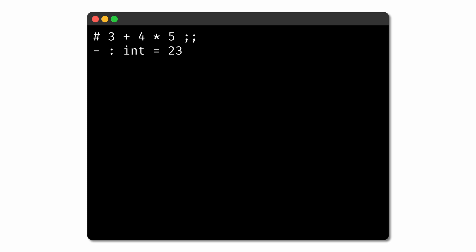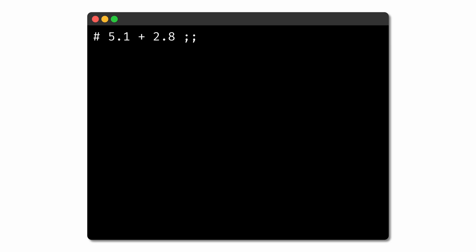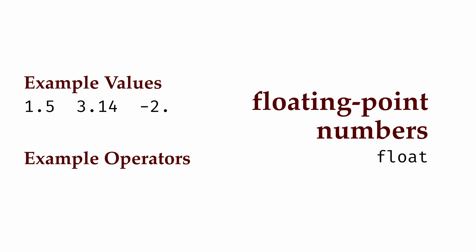If we want to represent real numbers in OCaml, we can use the type for floating point numbers, represented by the type expression float. Values like 1.5, 3.14, and negative 2 with a decimal point at the end are all examples of values of type float. Importantly, the operators for working with floating point numbers are different from those for integers. OCaml has operators: plus dot for addition, minus dot for subtraction, asterisk dot for multiplication, and slash dot for division.